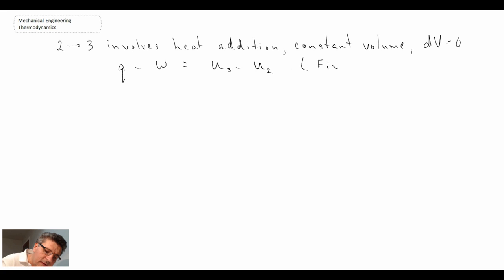So we're writing out the first law. And this is for a fixed mass control volume. Now the work in this equation here, if you recall back to when we talked about the first law for fixed mass, we said that the work could be work other plus boundary work. And the boundary work was defined as being PdV.